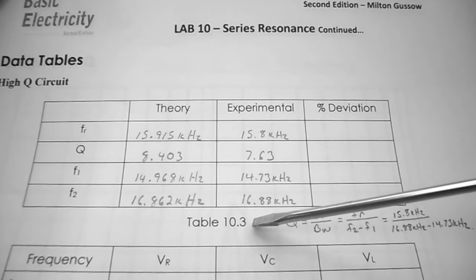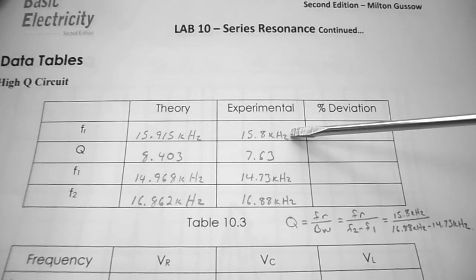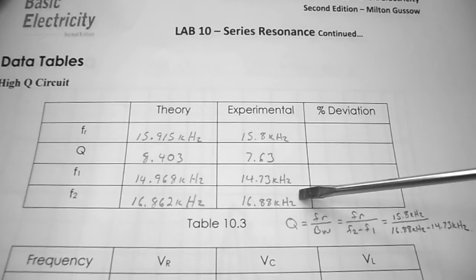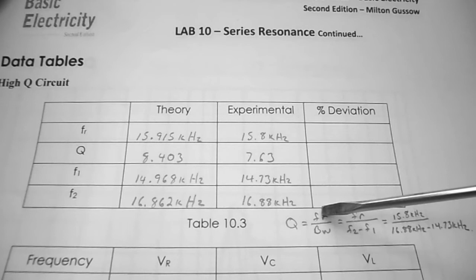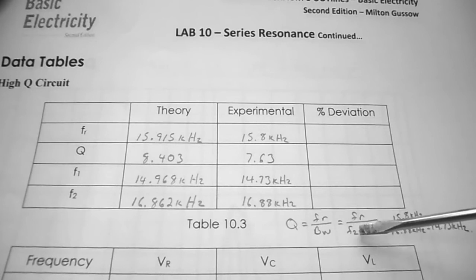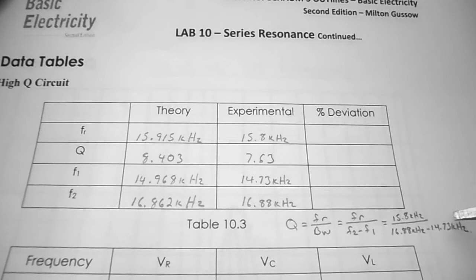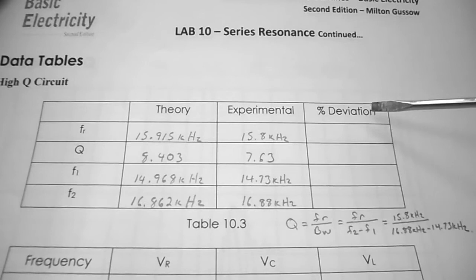Going back to Table 10.3, my experimental resonant frequency is 15.8 kHz, F1 experimental is 14.73 kHz, F2 experimental is 16.88 kHz. To calculate experimental Q: FR divided by bandwidth (F2 minus F1) = 15.8k divided by (16.88k minus 14.73k) = 7.63.